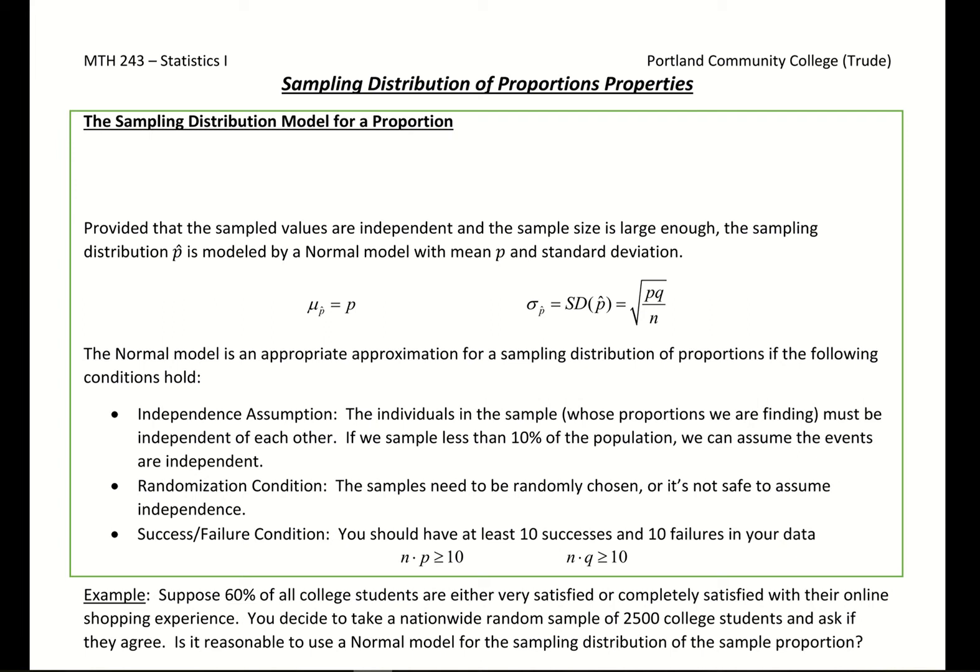Let's look at the properties for a sampling distribution of proportions. What we'll need to start these is some population proportion. We'll have to tell you some historical value or what we expect to come through as some proportion. Then what we want to do is see how p hat behave.